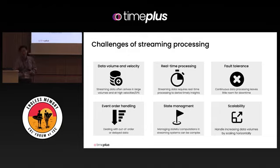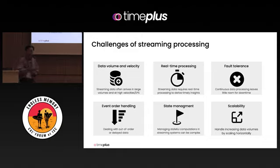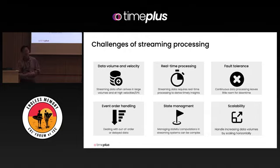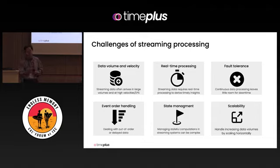The fourth item — particularly for streaming processing, we actually care a lot about event ordering. When something happens like A, B, C, we definitely care about the sequence. That's not really typical for big data use cases, but it's really important for event-driven models.